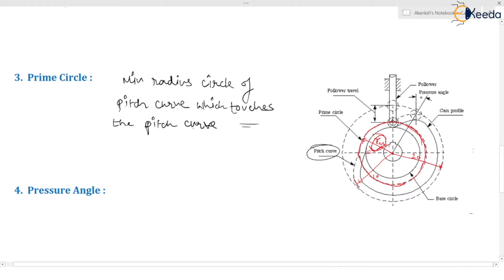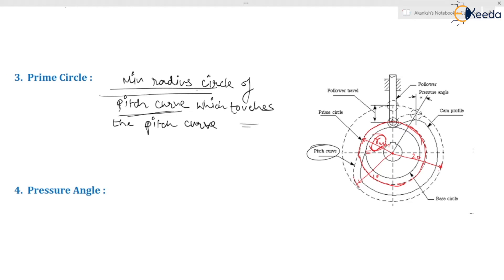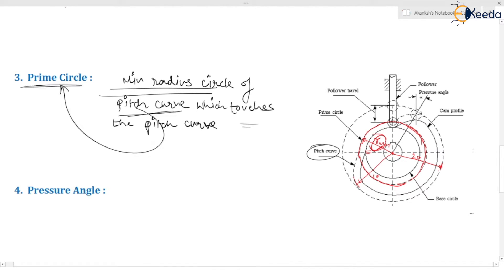In the examination, they will ask you the minimum radius circle of the pitch curve, and the options will be pitch circle, prime circle, base circle, like that. Students think that the minimum radius circle of the pitch curve is the pitch circle — but no, this is not true in case of cam. In the gear, you can say minimum radius circle of the gear can be considered as the pitch circle radius, but here in case of cam and follower, the minimum radius circle of the pitch curve is the prime circle.